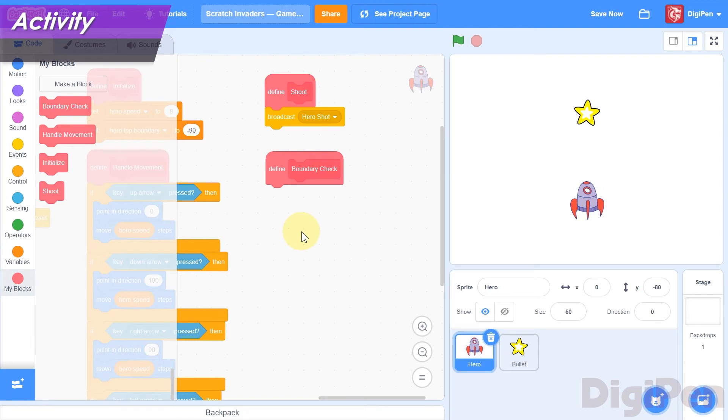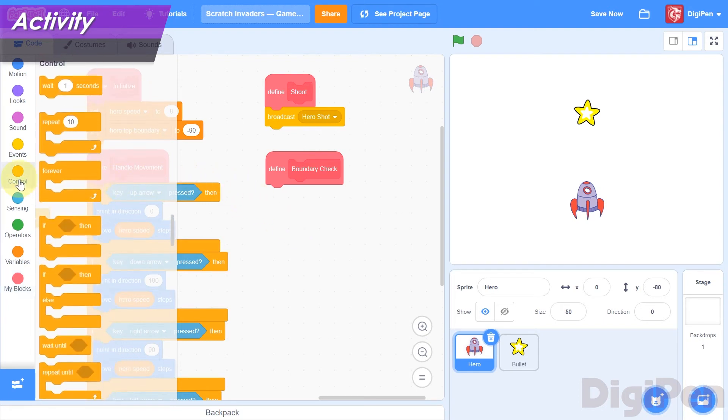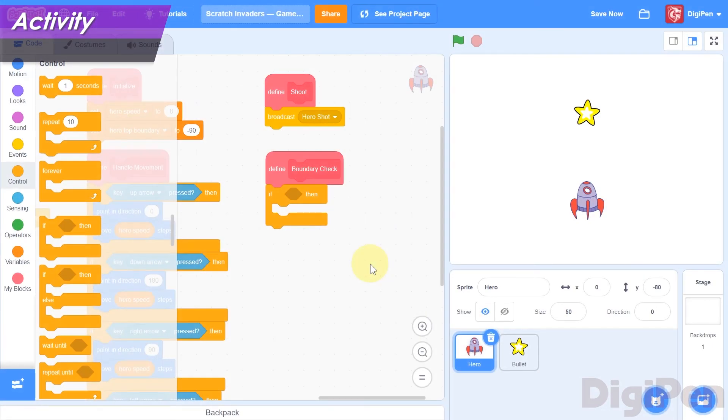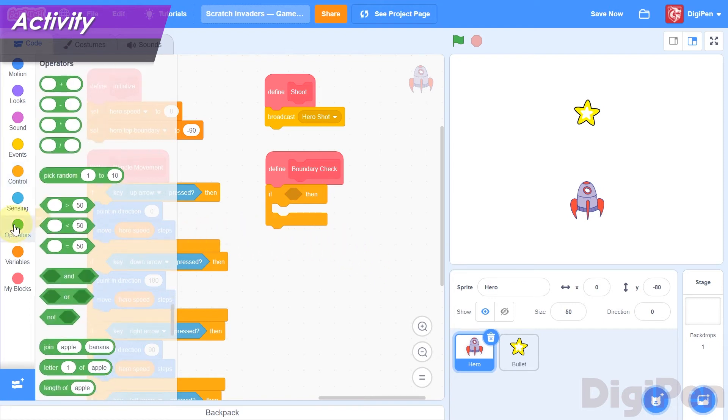Click the gold Control category on the left. In the block palette, find the If Then block. Drag it into the code area, and add it to the Boundary Check function. We want to see whether the Y position is greater than the top boundary, so click the green Operators category on the left, and find the Greater Than block. Drag and drop it into the Condition slot in the If Then block.